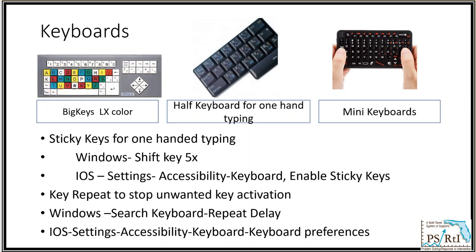Alternate mice are devices such as a trackball, a joystick, or the use of mouse keys on a standard keyboard. There are a variety of keyboard adaptations available, and in this case, size does matter. For a student with cerebral palsy, a bigger keyboard with a key guard may work well, while for a student with muscular dystrophy, a smaller keyboard which involves less of a movement range may be successful. There are also on-screen keyboards that can be adjusted and accessed with eyes or a head mouse, such as the Zono.